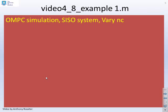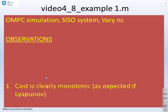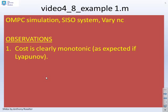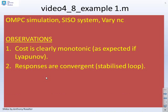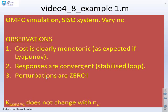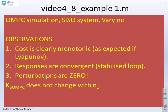So if we do OMPC, which is what's in video 4.8 example 1, we observe the cost is clearly monotonic, as we expected. The responses are convergent, as we expected. The perturbations C are zero, as we expected. And the compensator KSOMPC is in fact KOMPC, because we're doing the optimal case. And therefore, that's equal to K, and it does not change.